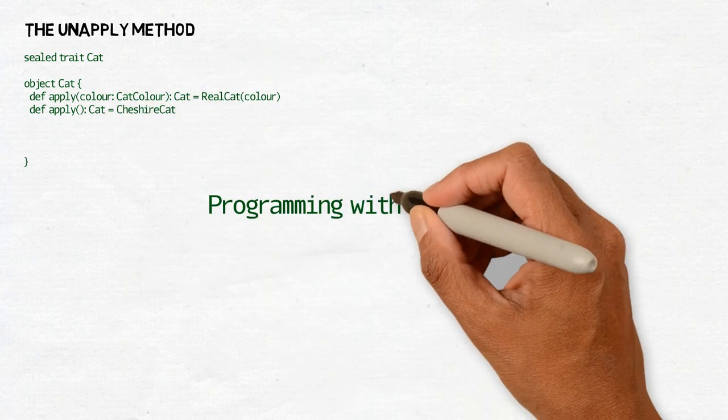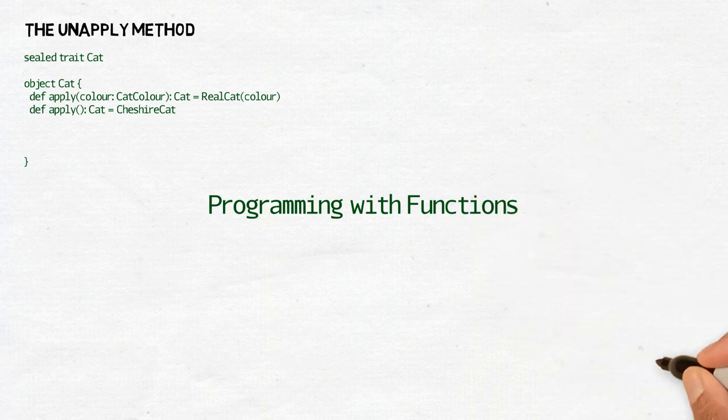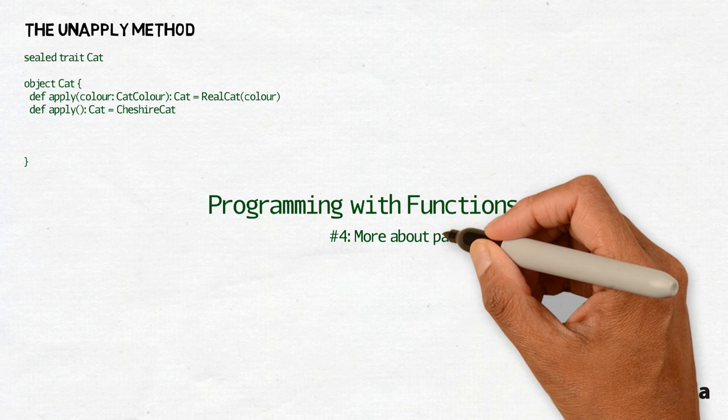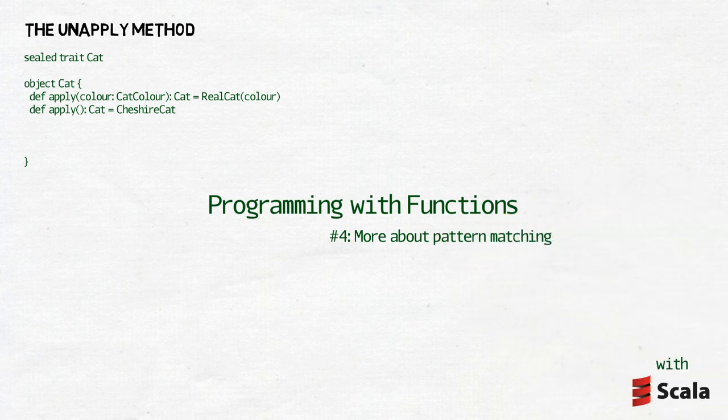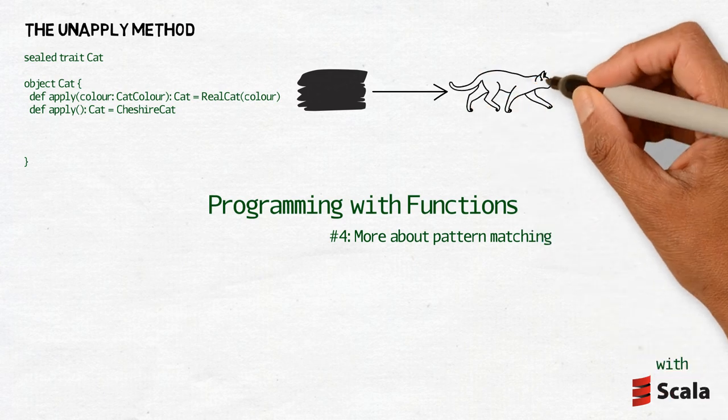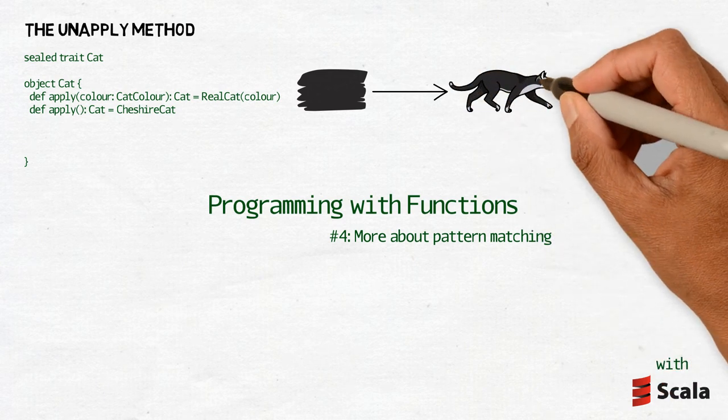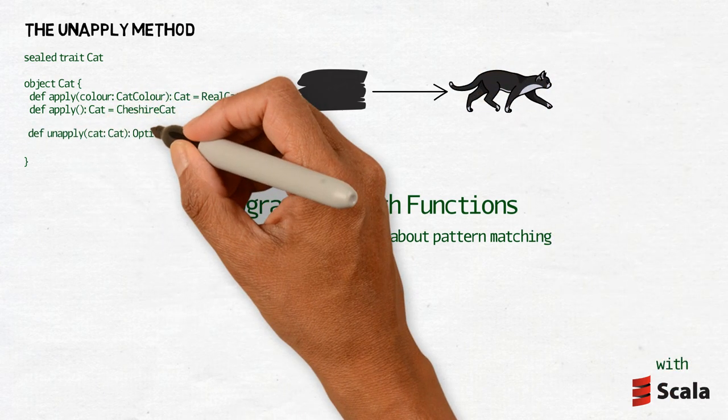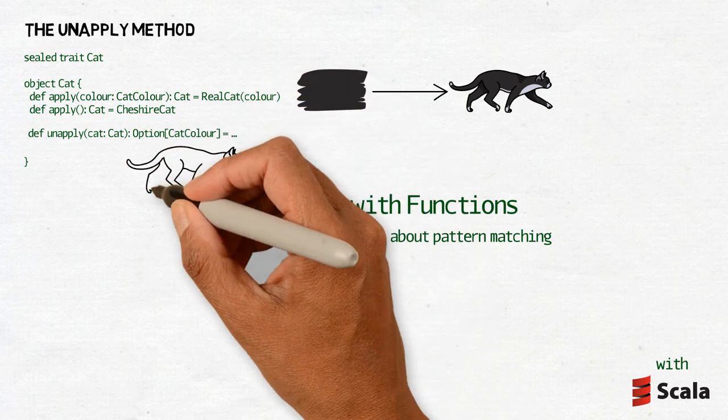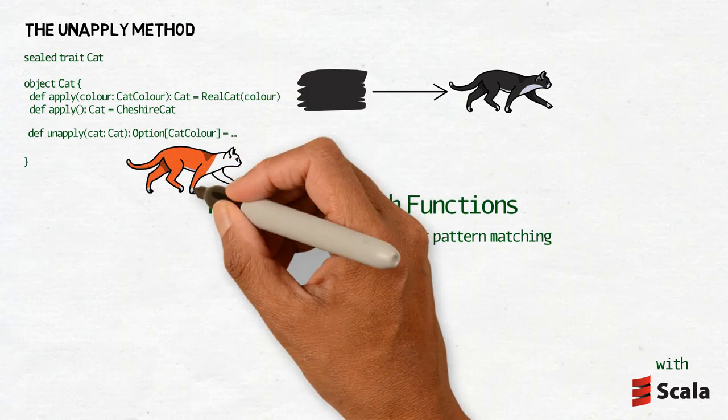There are two apply methods defined. They take the color of the cat, or its lack of color, and create a cat of the given color or without the color at all. Since right now the color is the only property of the cat, then with a bit of stretch of imagination you may think of it as wrapping the cat around the color.